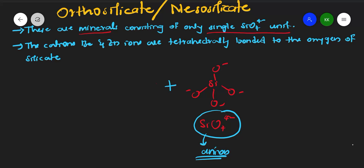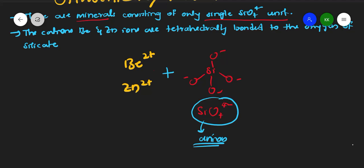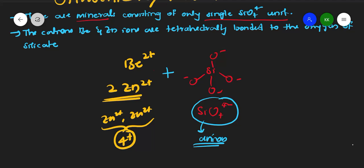For orthosilicates, the metals can be beryllium or zinc, and they will have a 2+ charge. If we have two molecules of a 2+ metal ion, that gives a total of 4+ charge. This 4+ from the cation and 4- from the SiO4 anion balance each other, so the compound is neutral.